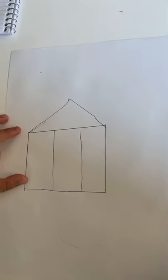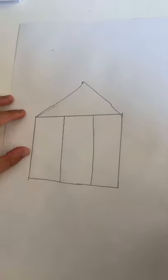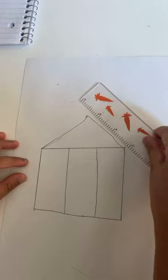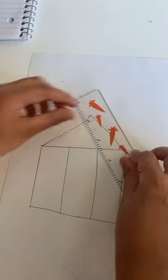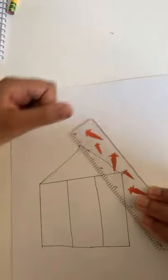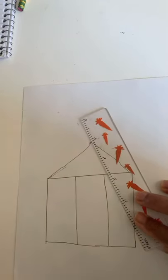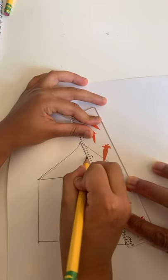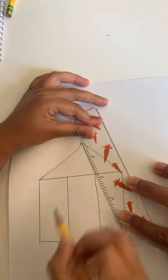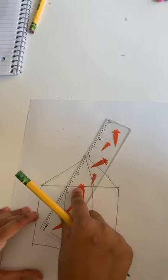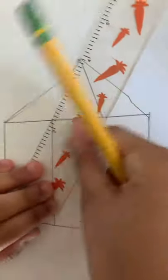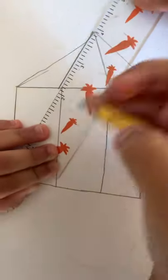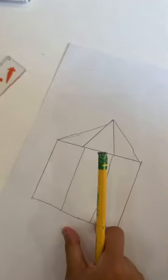And now before we are done there's two more steps, the border lines. Let's do this. First we'll do that, and then the next one will be like this. Two perfect lines. And now we're done.